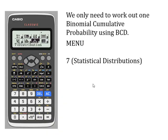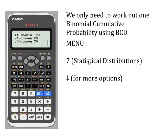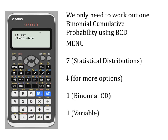How do we do it on our calculator? With this method we only need to work out one binomial cumulative probability, so we can use BCD. Go to menu, then seven for statistical distributions. BCD is not one of the first options, so press down for more options, then press one for the binomial cumulative distribution. For this approach we only need to find one probability, so choose the variable option — number two.